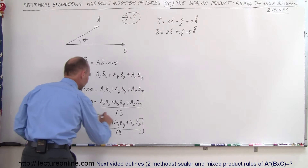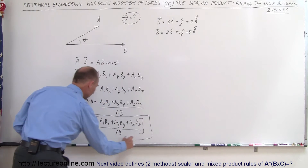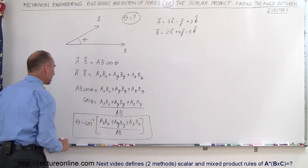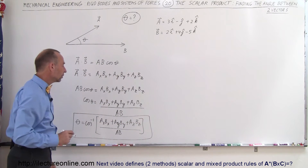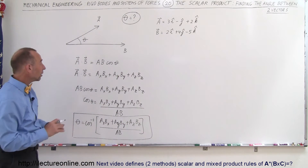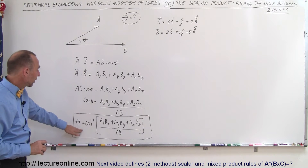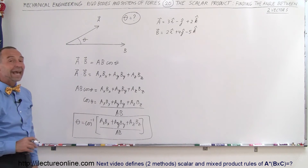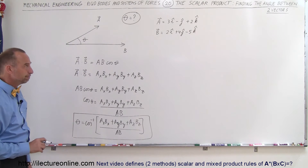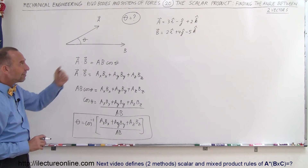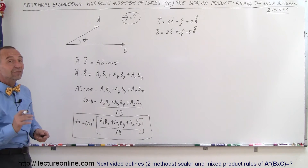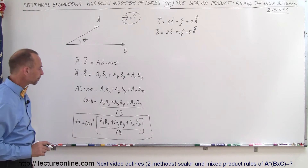Finally, we can find the angle theta by taking the inverse cosine of that quantity. And so this now becomes our tool — using the scalar product or dot product between two vectors to find the angle between them. So here we have A and B; let's see if we can do that.